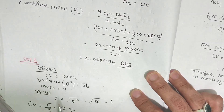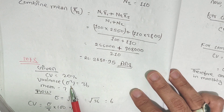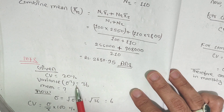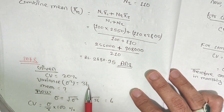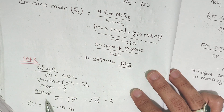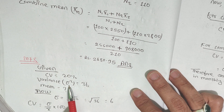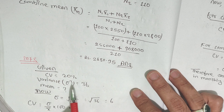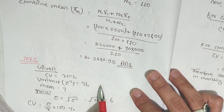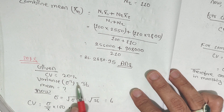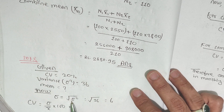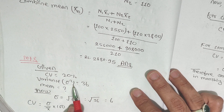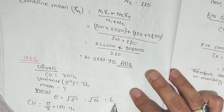Variance is the square of standard deviation, so to get standard deviation from variance we take the square root. Taking the square root of variance 36 gives sigma equals 6.